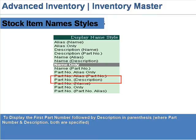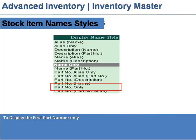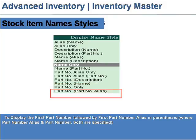Part Number (Description): to display the first part number followed by description in parenthesis, where part number and description both are specified. Part Number Only: to display the first part number only. Part Number (Part Number Alias): to display the first part number followed by first part number alias in parenthesis, where part number alias and part number both are specified.